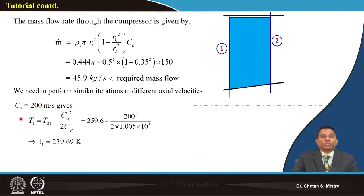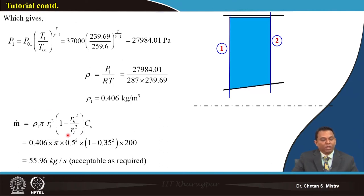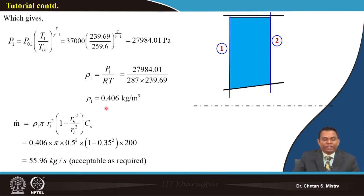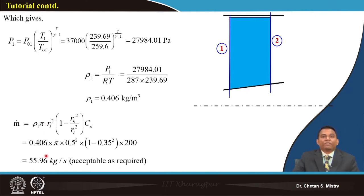Taking axial velocity as 200 m/s, the static temperature becomes 239.69 K, static pressure 27.98 kPa, and density 0.406 kg/m³. Substituting into the mass flow rate equation gives 55.96 kg/s, which is in the acceptable range. This is an important iterative step when assuming axial velocity.